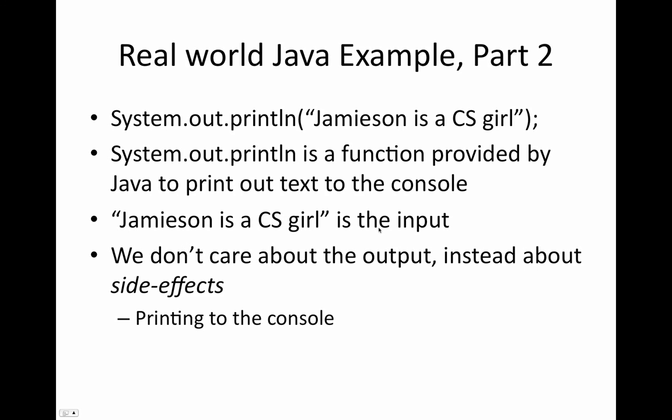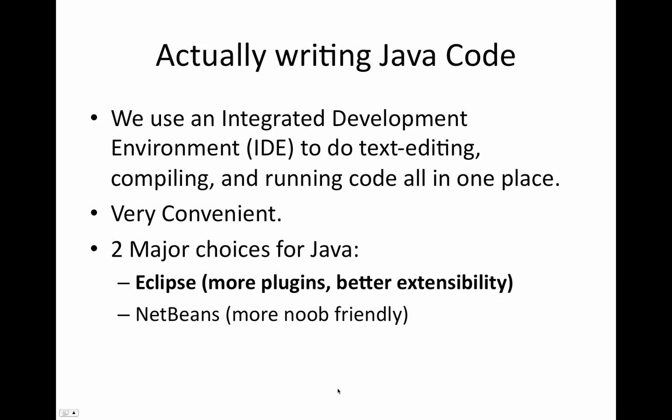So Jameson is a CS girl is the input, and we really don't care about the output. But we care about the side effects of calling the function, i.e., the side effect is printing to the console. So you don't actually care whether the function returns a value, you care that inside of the function something happens, and a side effect of that thing happening is that out on the console, it now says Jameson is a CS girl.